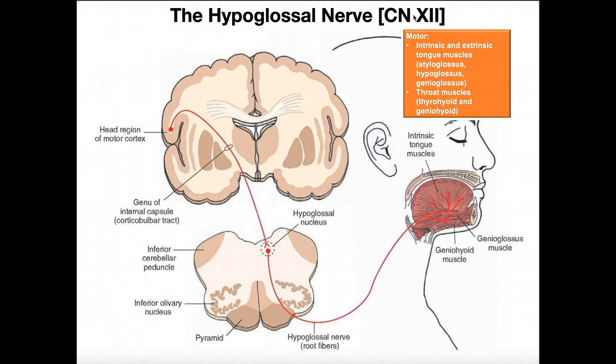The hypoglossal nerve is a purely motor nerve. It's one of five motor nerves that are cranial nerves — cranial nerves 3, 4, 6, 11, and 12.